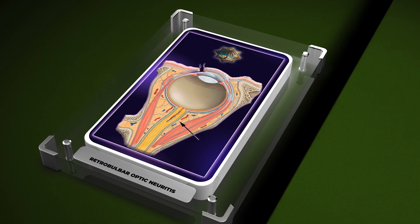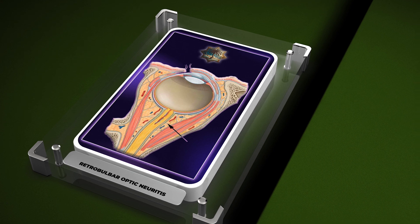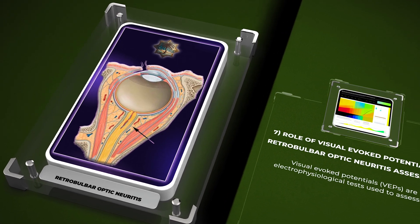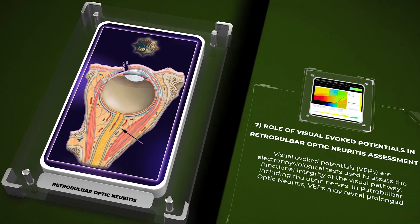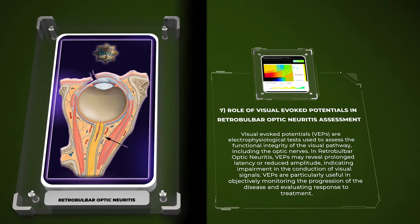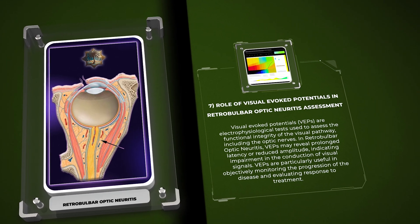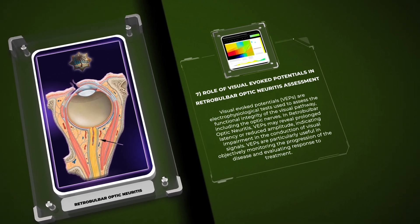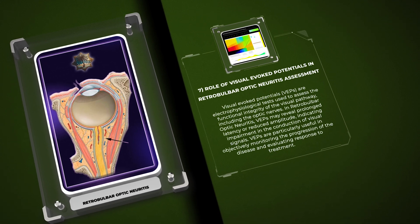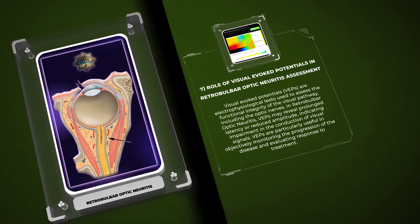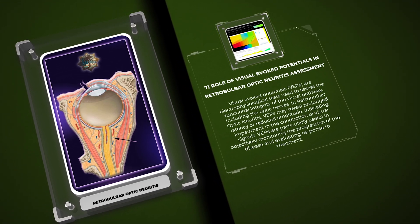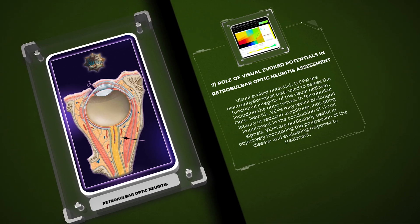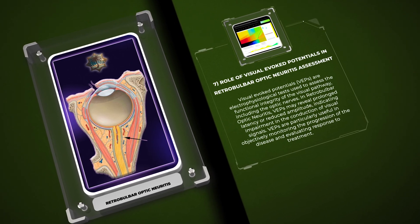Visual evoked potentials (VEPs) are electrophysiological tests used to assess the functional integrity of the visual pathway, including the optic nerves. In retrobulbar optic neuritis, VEPs may reveal prolonged latency or reduced amplitude, indicating impairment in the conduction of visual signals. VEPs are particularly useful in objectively monitoring the progression of the disease and evaluating response to treatment.